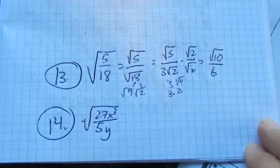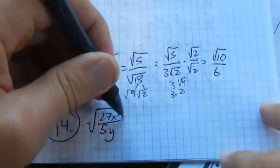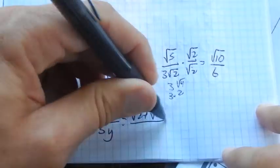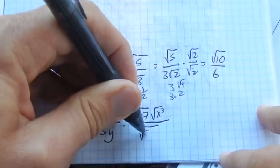Number 14. Same type of thinking, just a little bit more work. So this is square root of 27, square root of x cubed over square root, I'm going to leave this as 5y.